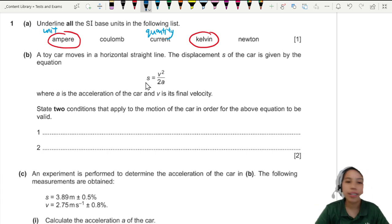Next. So we have this equation. Toy car moves in a horizontal straight line. We got this. S equals V squared over 2A. A is the acceleration and V is the final velocity. State two conditions that apply to the motion of the car for the equation to be valid.